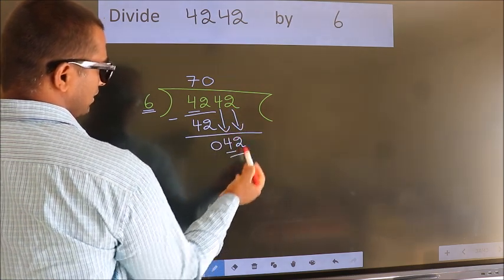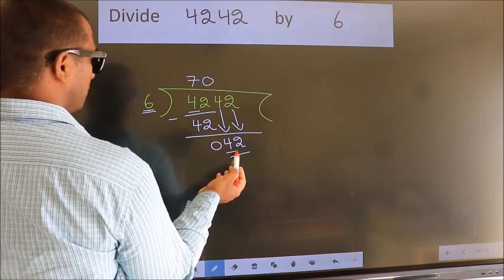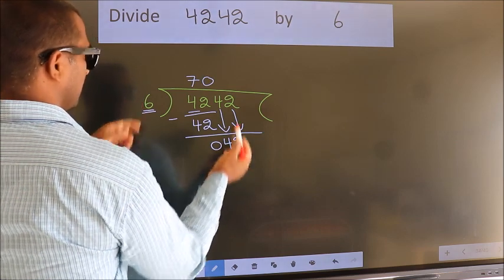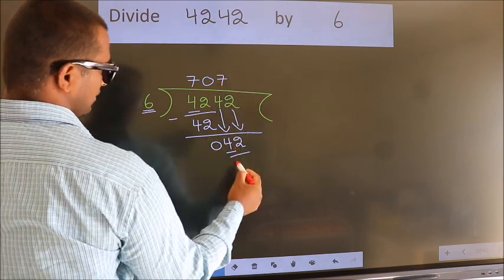So, 42. When do we get 42? In 6 table, 6 times 7 is 42.